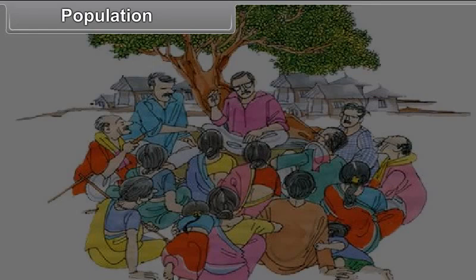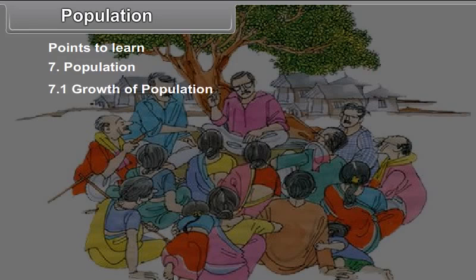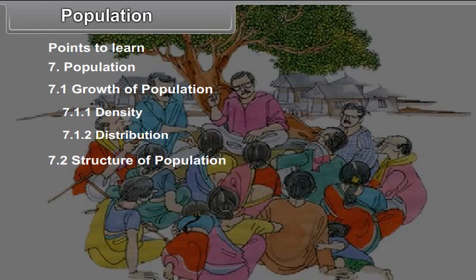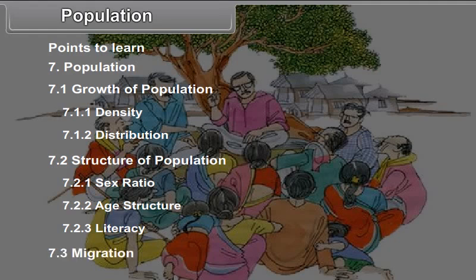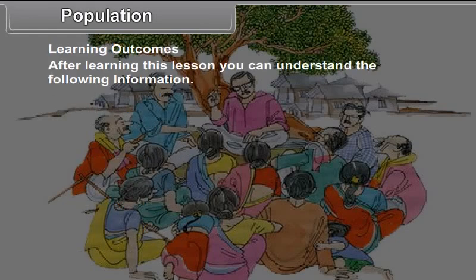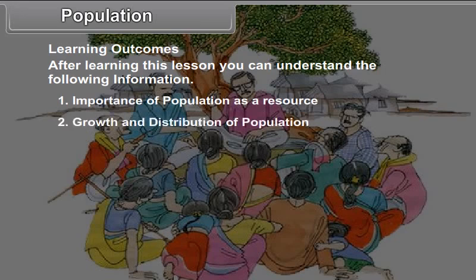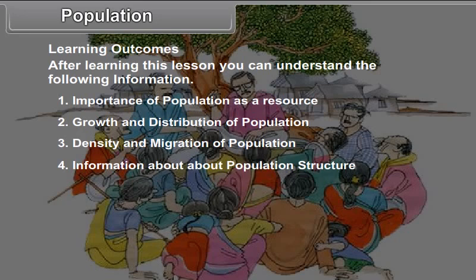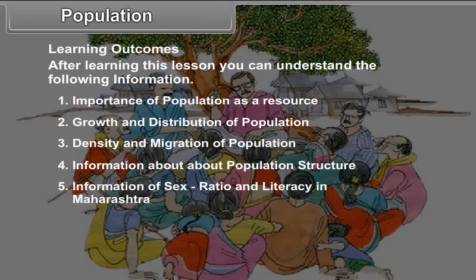Standard 9th Geography, Chapter 7: Population. Topics to learn: 7.1 Growth of Population, 7.1.1 Density, 7.1.2 Distribution, 7.2 Structure of Population, 7.2.1 Sex Ratio, 7.2.2 Age Structure, 7.2.3 Literacy, 7.3 Migration. Learning outcomes: after learning this chapter, you will understand the importance of population as a resource, growth and distribution of population, density, migration, population structure, sex ratio, and literacy in Maharashtra.